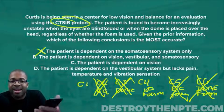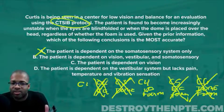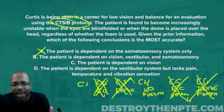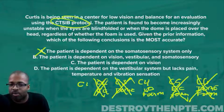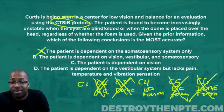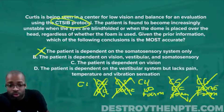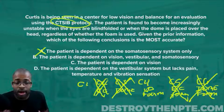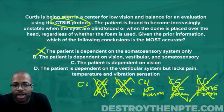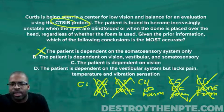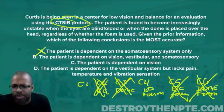Answer B says the patient is dependent on vision, vestibular, and somatosensory. We just established the patient is not dependent on somatosensory — otherwise they'd be stable on C2 and C3. Since part of answer B is untrue, we can eliminate B. But let's also consider the vestibular component mentioned in B before moving on.